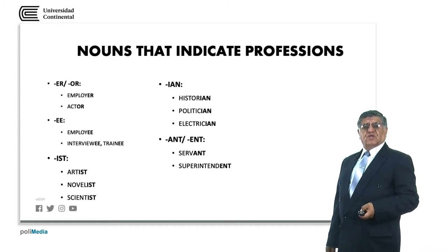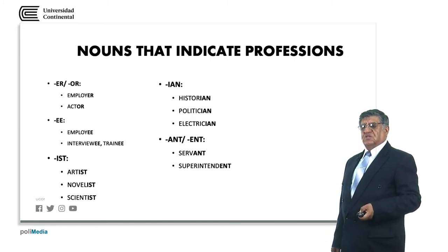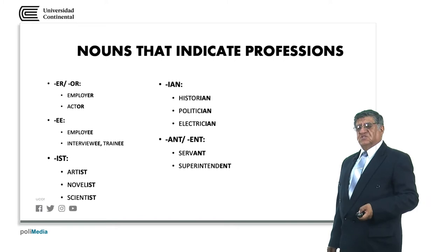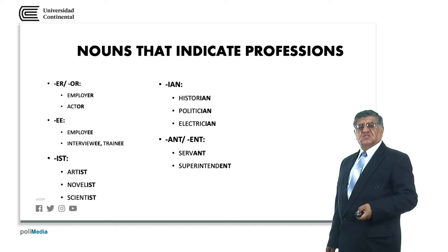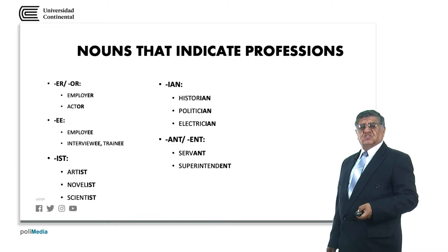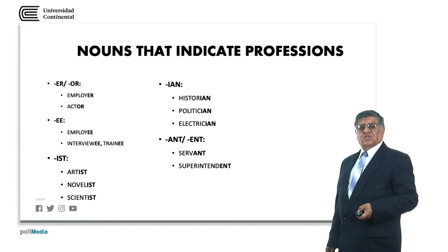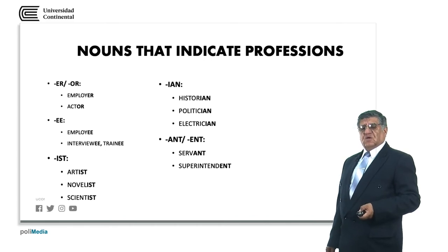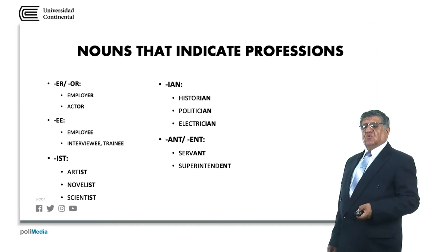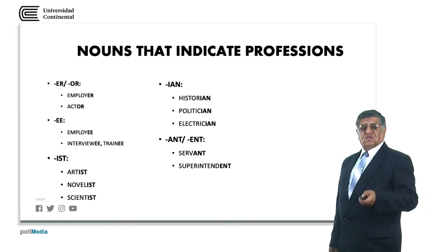Artist, novelist, scientist use -ist. An artist is a person that practices art. A novelist is a person that writes novels. A scientist is a person who practices science. Historian, politician, electrician use -ian. A historian is a person who studies history. A politician is a person that practices politics. An electrician is a person that works with electricity. A servant is a person who serves. A superintendent is a person who leads or manages an industry or organization.